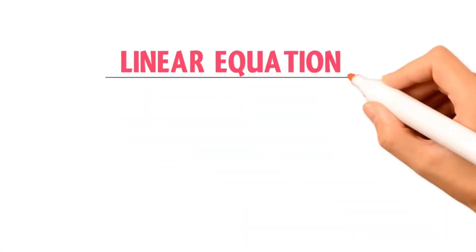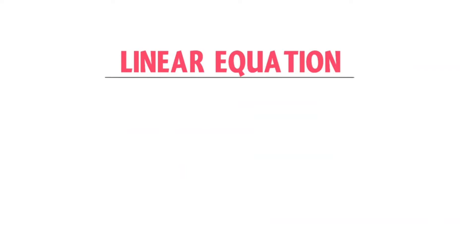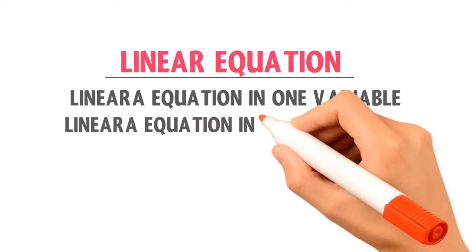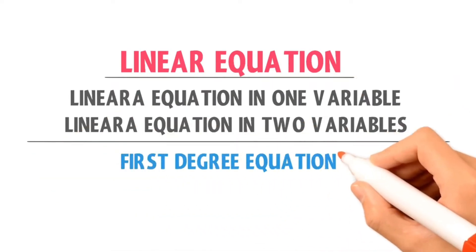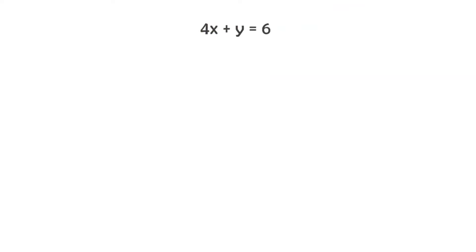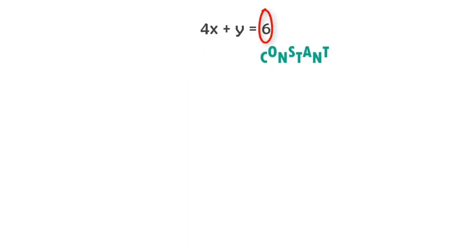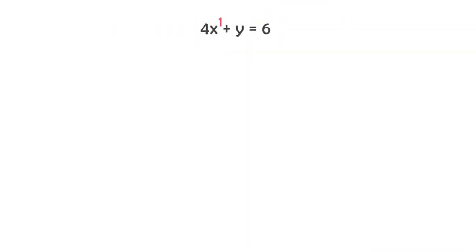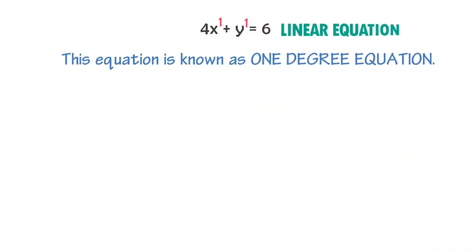Linear equation. In this lecture, we will discuss linear equations in one variable and two variables, which are first-degree equations. If I write 4x plus y is equal to 6, this equation has three terms: 4x, y, and 6. The x and y are variables, 6 is the constant, and 4 is the coefficient of x. The highest power of x is 1 and the highest power of y is also 1. Hence, all variables have the highest power 1, so this equation is known as a one-degree or linear equation.